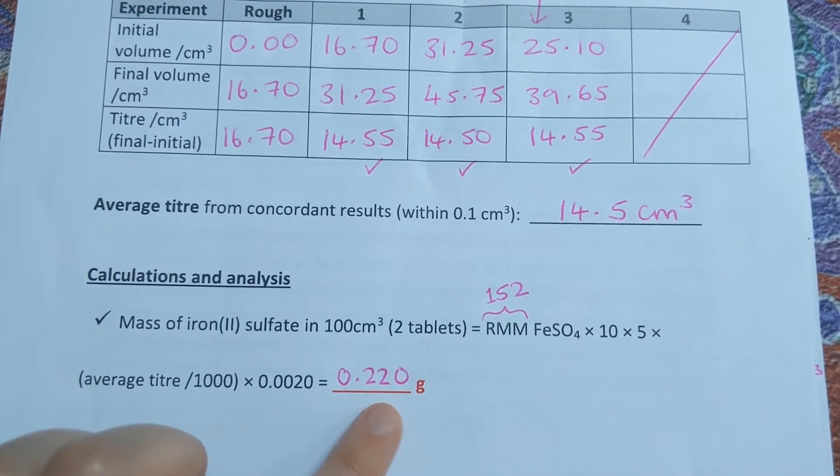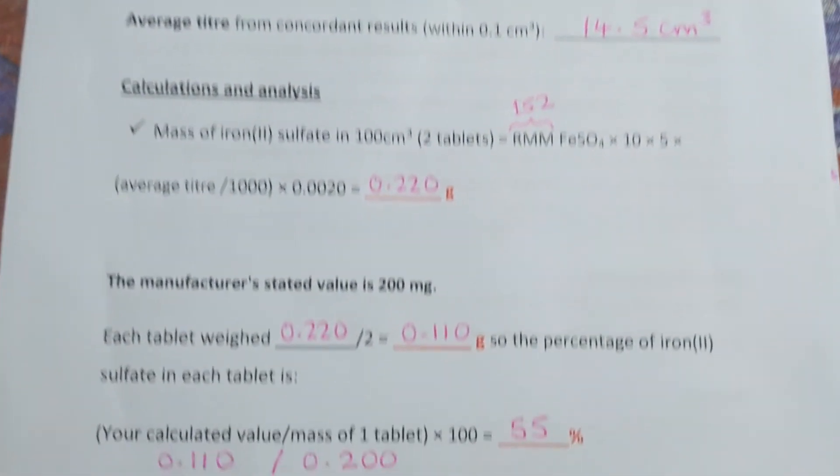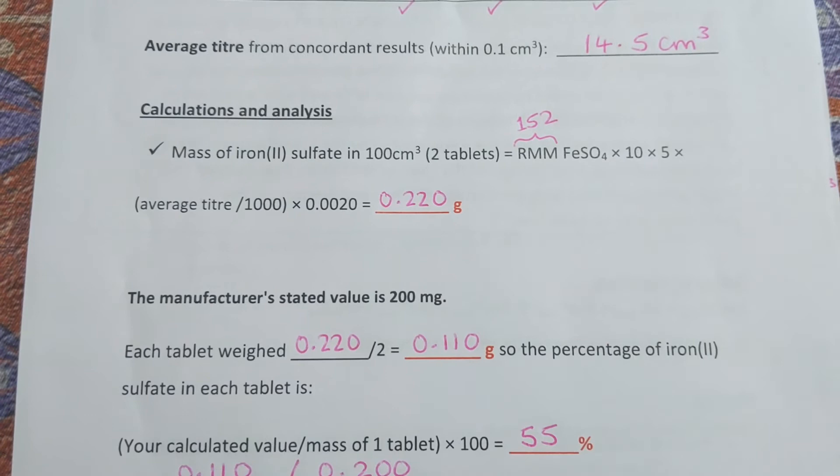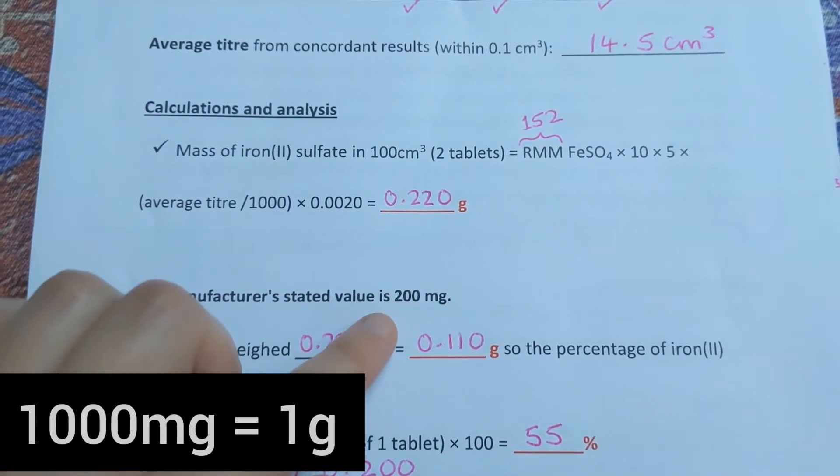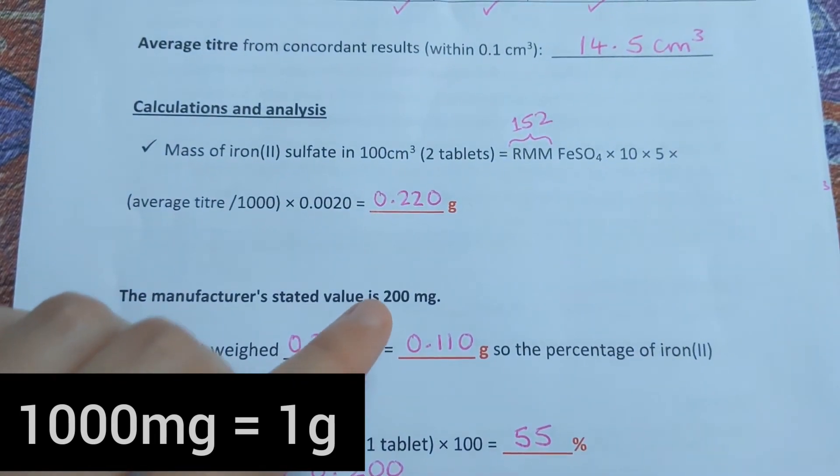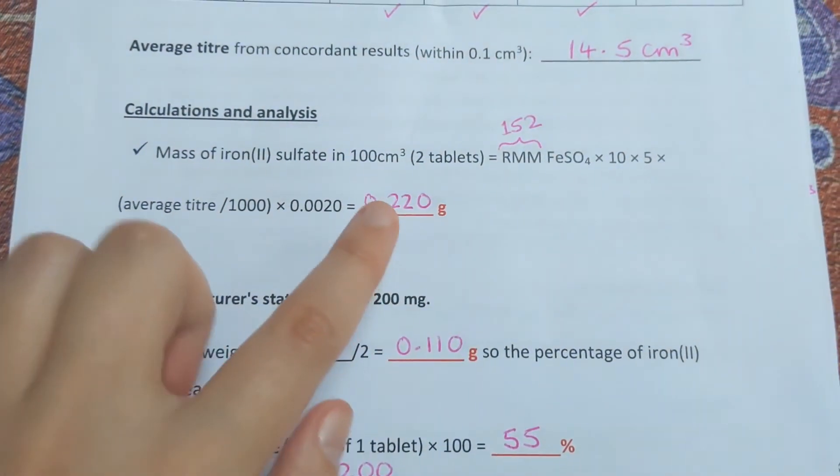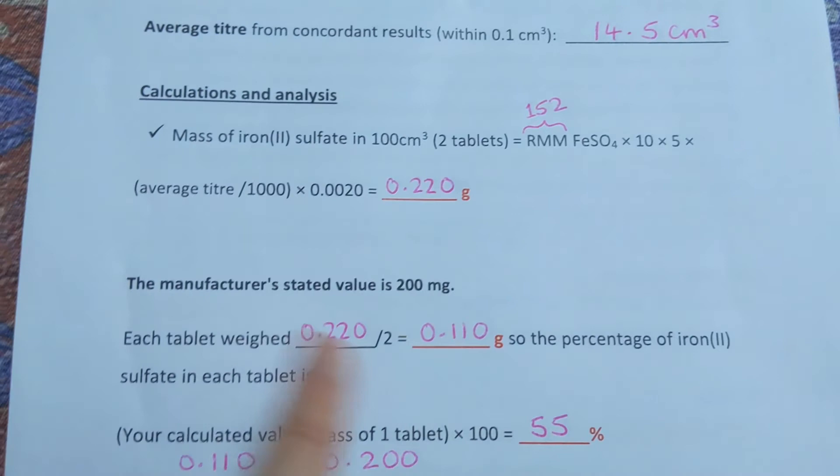On the packet of the tablets it said that the iron tablets weigh 200 milligrams. We want to find out how much of this mass is iron and how much is something else. Remember, this mass here is for two tablets, so we have to halve this to get the mass of one tablet.